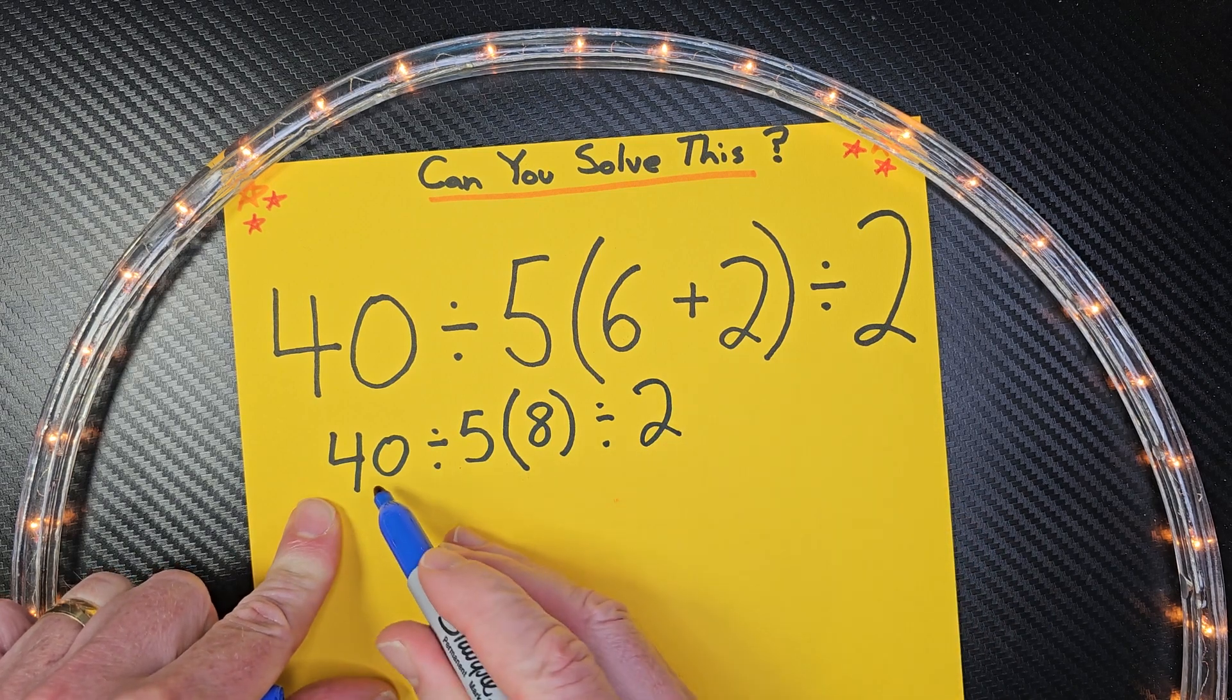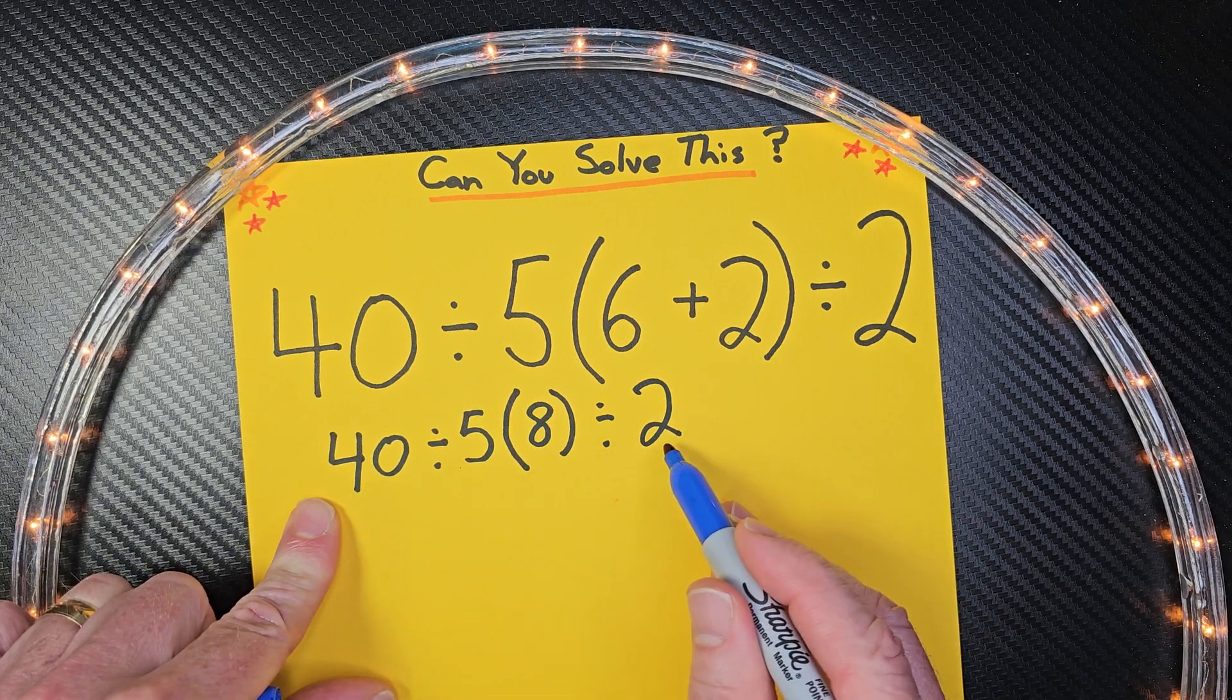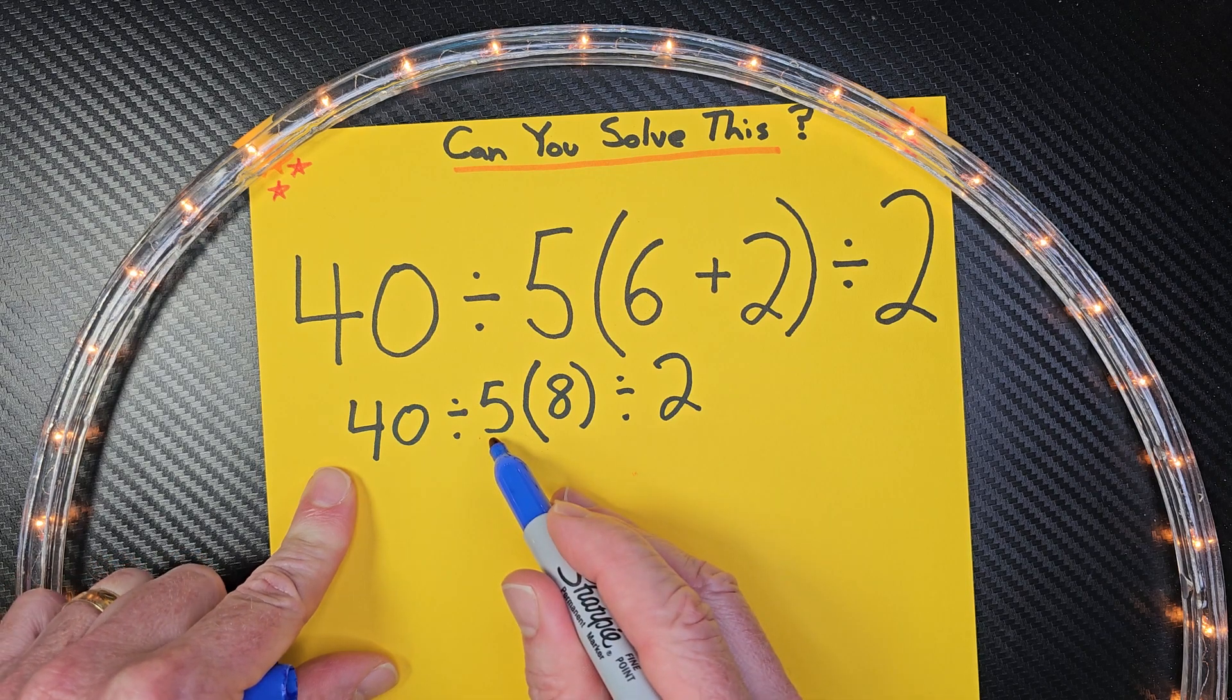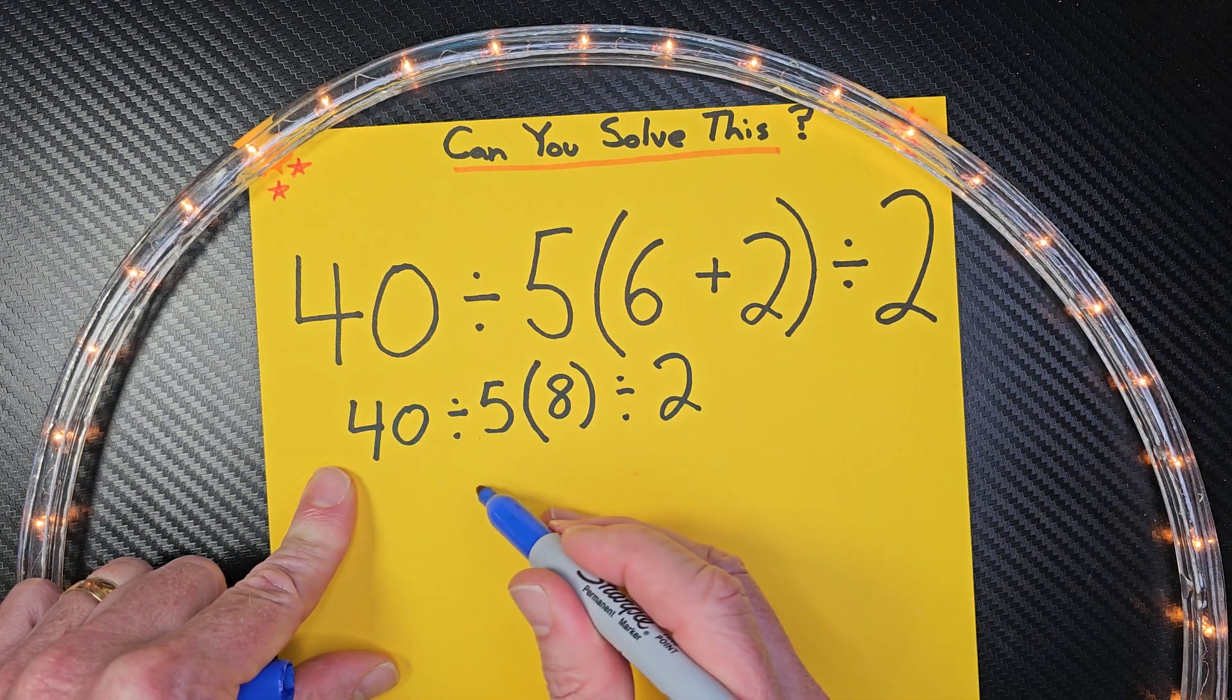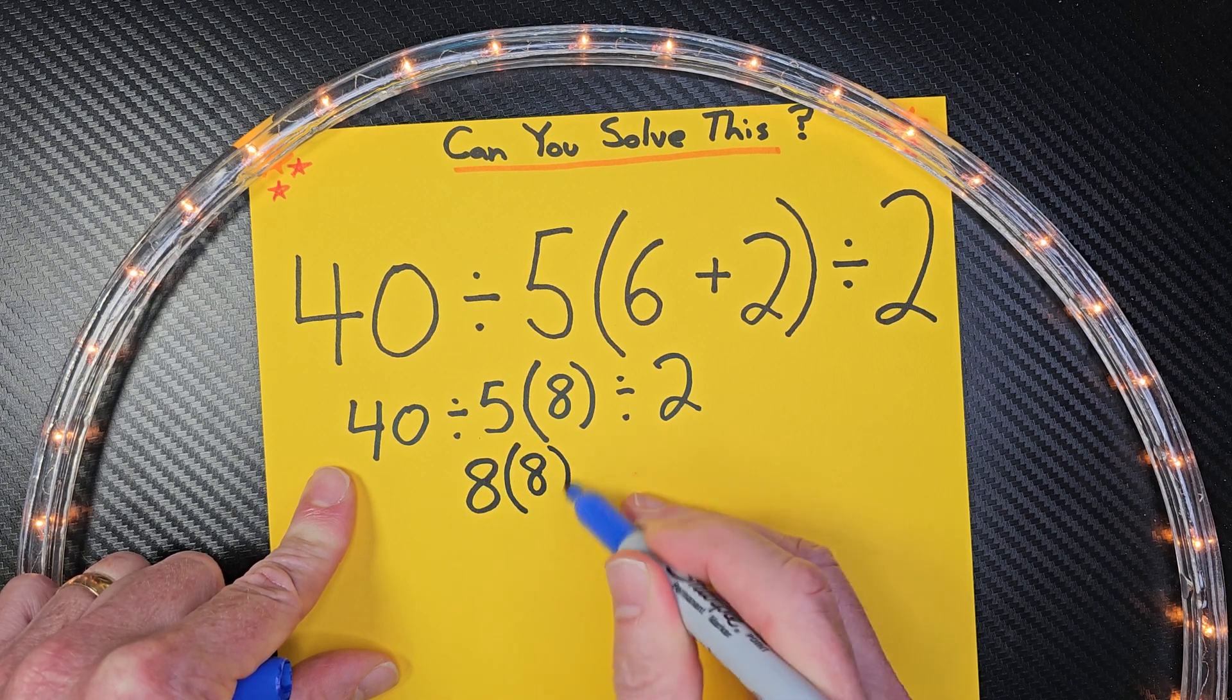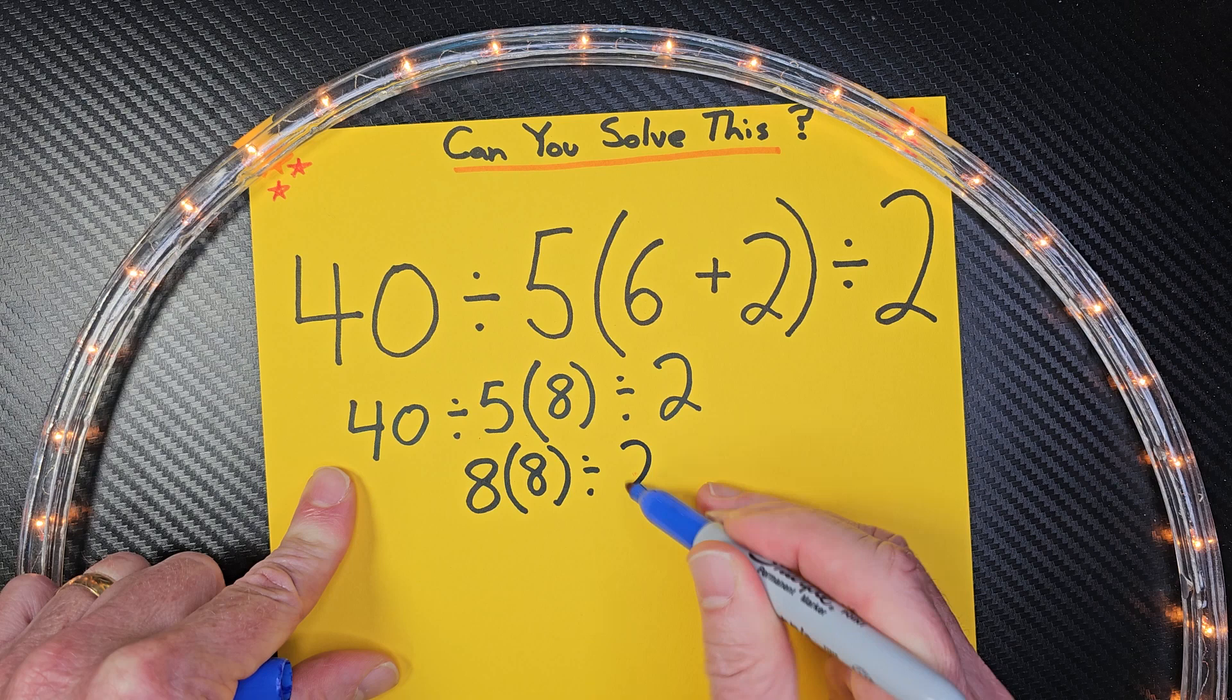Then we start going from left to right with our multiplication and division. So 40 divided by 5. What times 5 equals 40? Eight. We put 8 right here times 8 divided by 2.